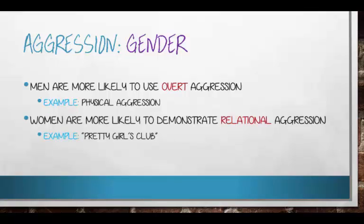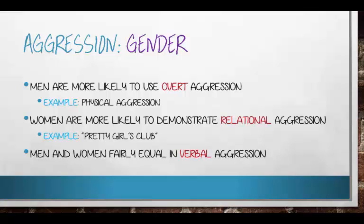Women are more likely to use relational aggression — manipulating social relationships to hurt or harm someone. For example, a first grade girl was mad at another girl, so she formed the 'pretty girls club' and invited everyone except that one girl, who was ostracized for the rest of the year. If we look at verbal aggression, men and women are about equal — it depends more on your position or power base than your sex. It seems we all have equal potential for aggression; what may differ is the mechanism we use.